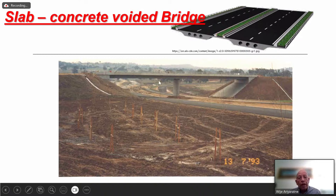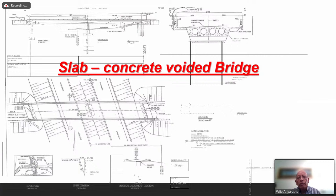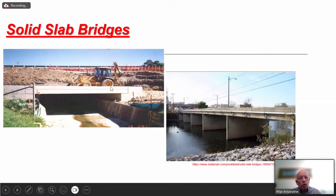Voided slabs have voids to reduce concrete self-weight. They are very good when you have varying width of a bridge because they are cast in-situ, so you can take any curvature and widen or narrow the bridge as required by road geometry. Solid slabs are rarely used now because of weight — they are like small culverts suitable for very small spans but not cost effective.